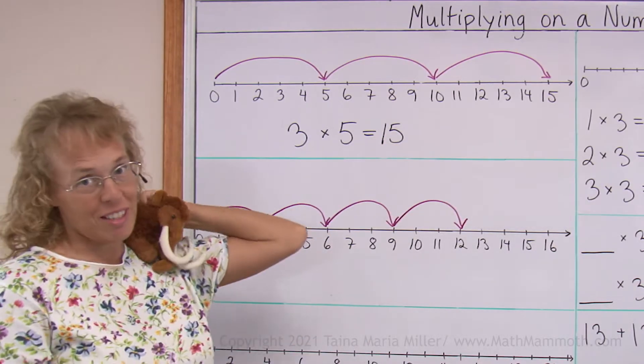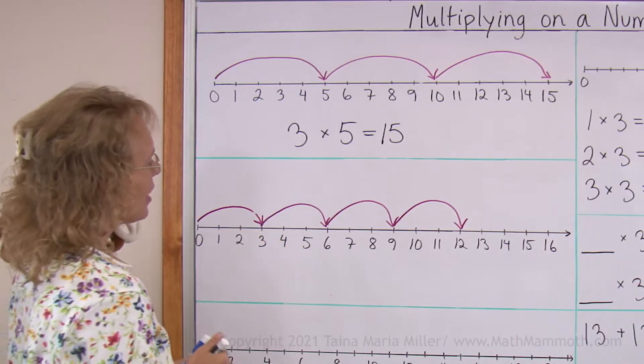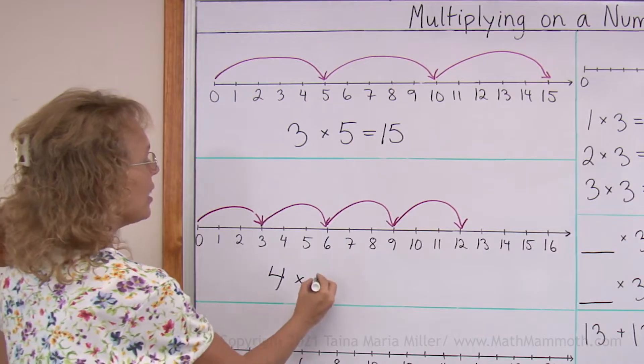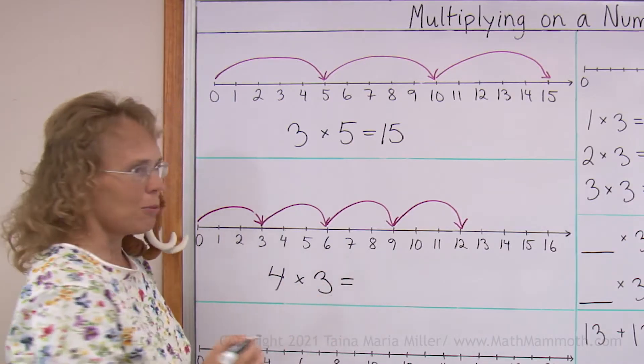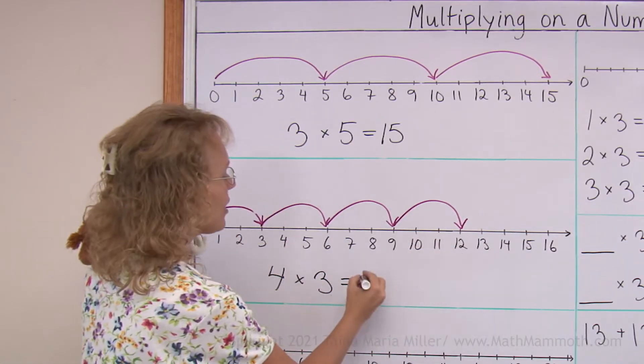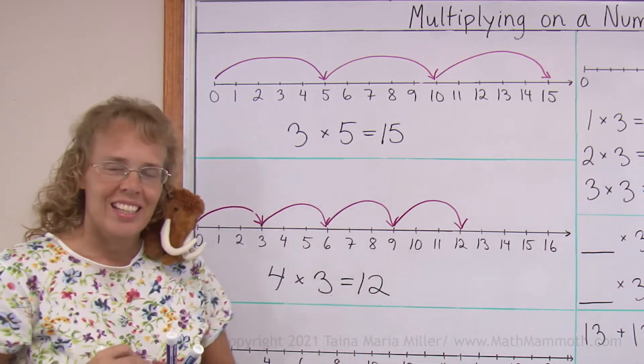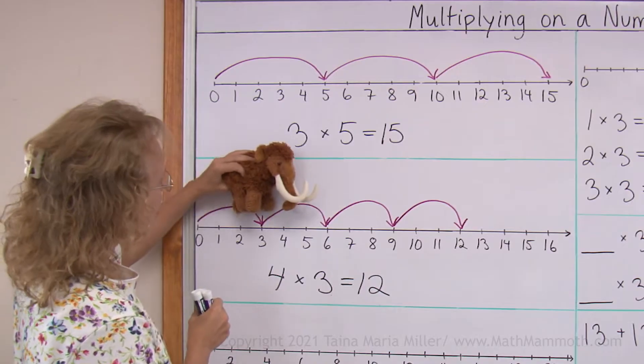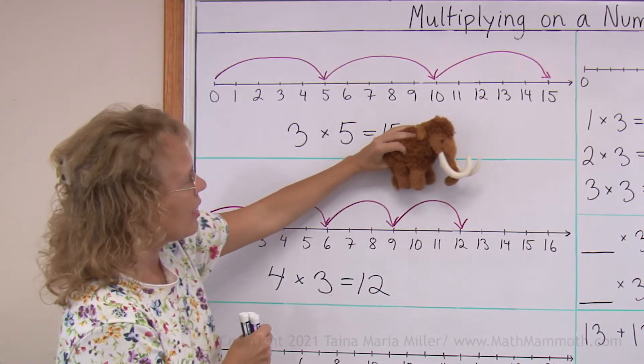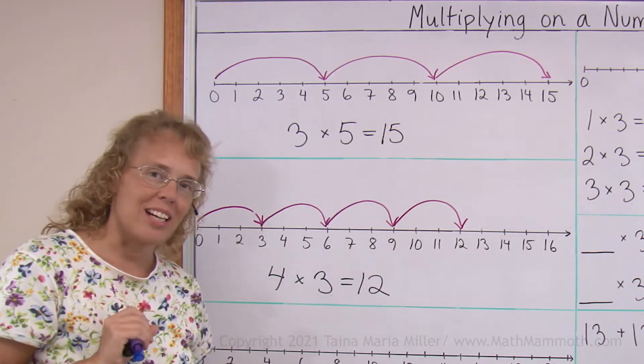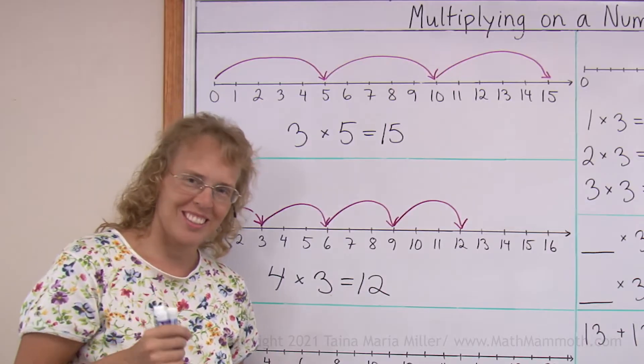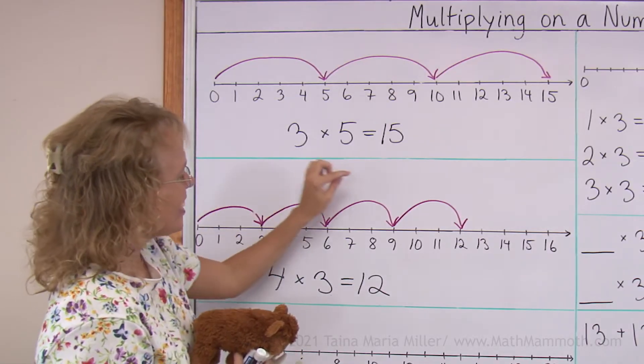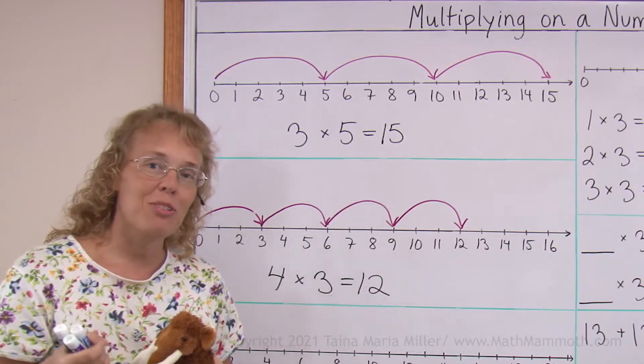What multiplication can we write? There are four jumps and each one is three long. And we land at, in the end, at twelve. Now, those intermediate jumps that he did, remember he landed at three and six and nine and twelve. When we jump like that, it's also called skip counting. Three, six, nine, and twelve. It is skip counting by threes.